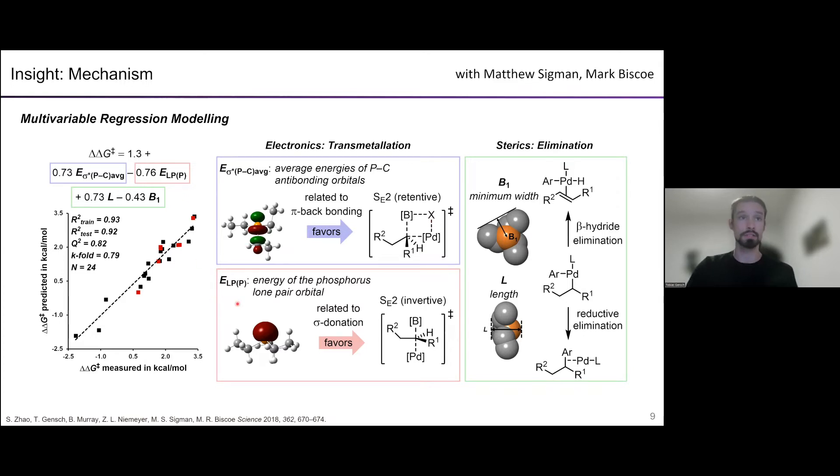Conversely, the other electronic descriptor that we have in the model is the energy of the phosphorus lone pair orbital. This is the orbital that is responsible for sigma forward donation upon complexation with a metal. Here we can see that this is associated with the stereo invertive transition state for transmetalation, where the metal fragment approaches from the backside of the carbon and kicks out the boron fragment to the other side. This would be favored by a more electron-rich metal fragment because here we need a coordinatively unsaturated metal species in order to accommodate the geometry required in the transition state. When I say it like this, it always sounds so obvious, but without the modeling we didn't really know how to make sense of this. So this was really gratifying that we were able to find a way to get some insight in how these ligands discriminate these two transition states for transmetalation.